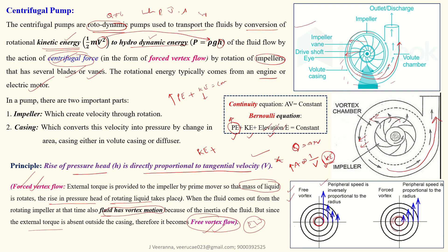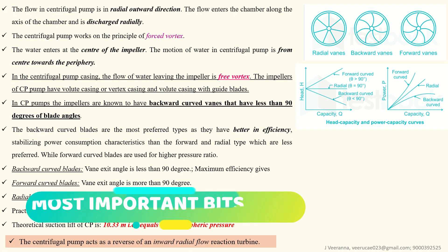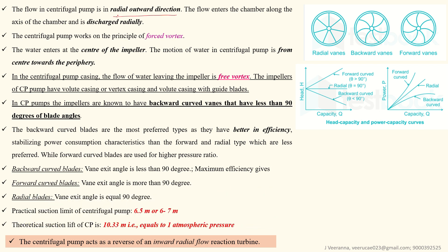In a forced vortex, when the radius increases the velocity also increases — radius is directly proportional to speed. With this background, we can understand that the flow in a centrifugal pump is in the radially outward direction, meaning the discharge moves in a curved radial path.